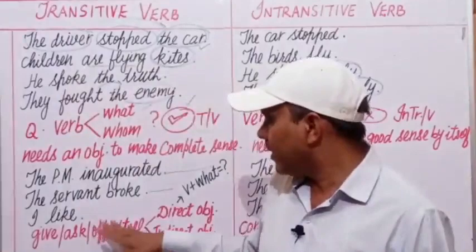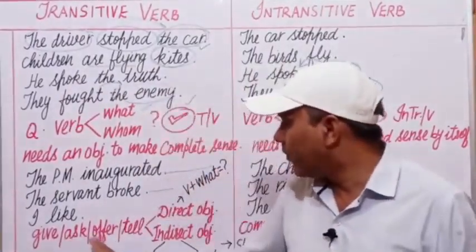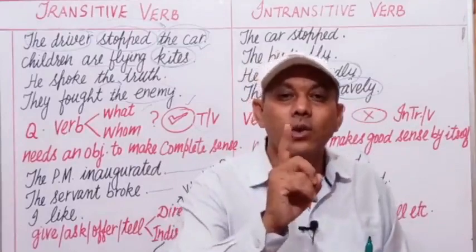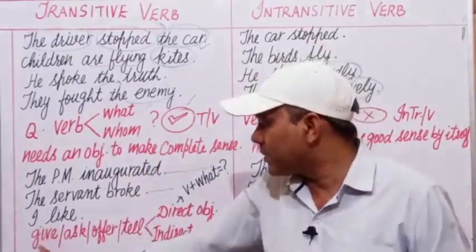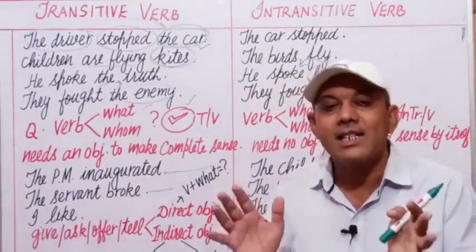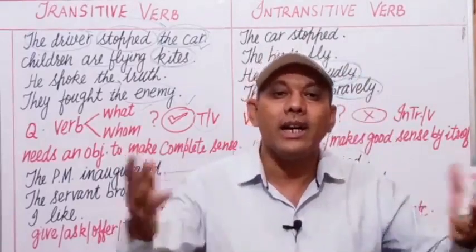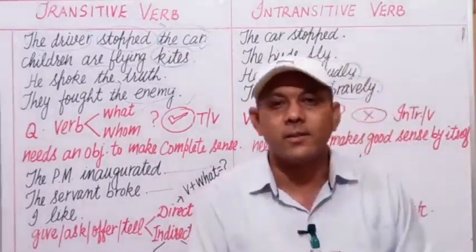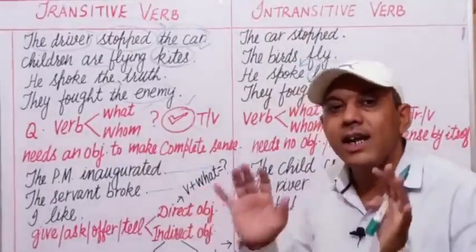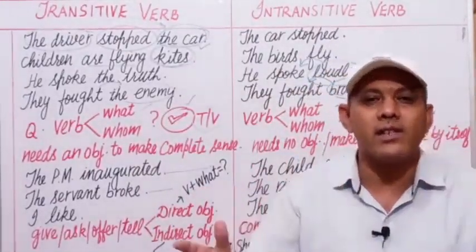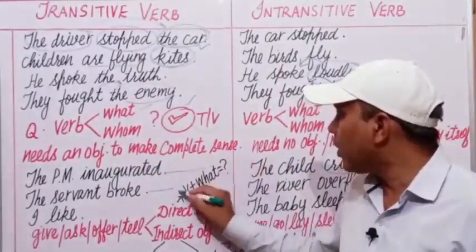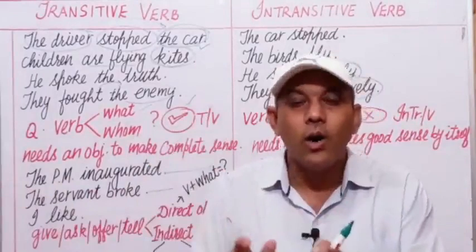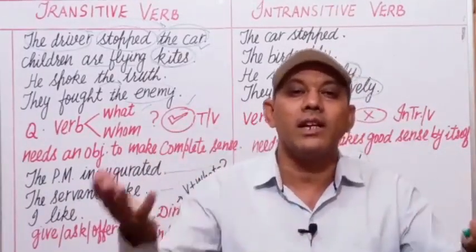A few verbs like give, ask, offer, tell, etc. have two objects — a direct object and an indirect object. Most transitive verbs take a single object, but these verbs have double objects. To identify the direct object, frame the question verb plus what? — you get the direct object. To find the indirect object, ask to whom something is given or for whom something is done.